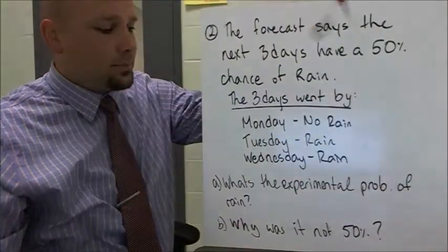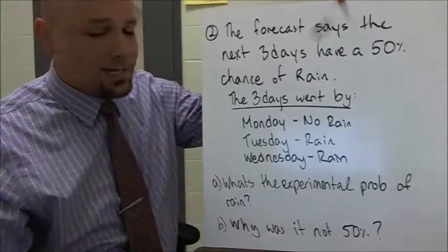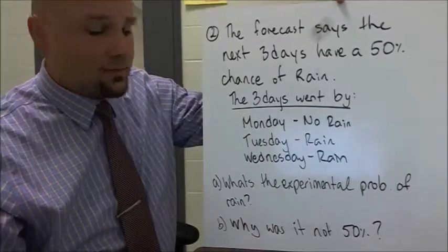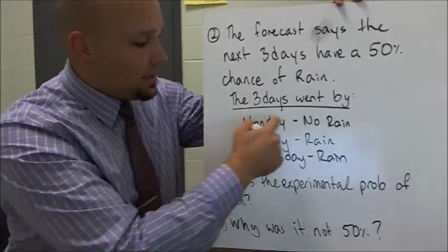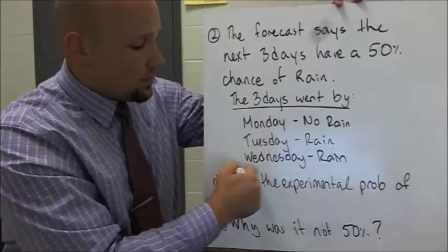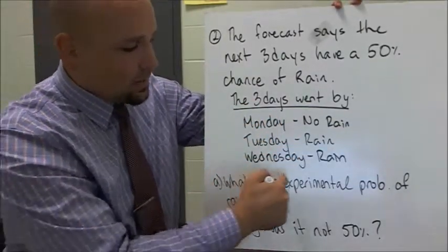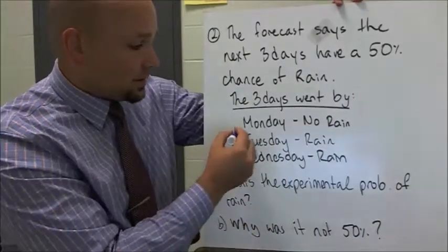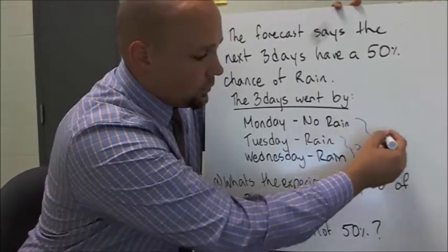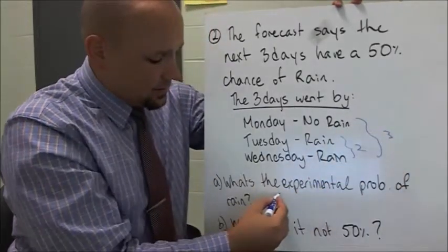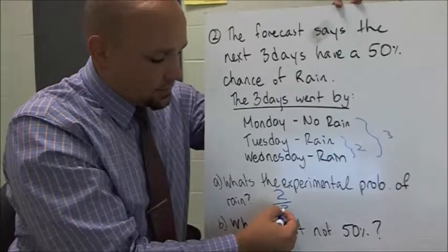So let's look at another example. The forecast says the next three days have a 50 percent chance of rain. Three days went by and Monday there was no rain, Tuesday there's rain, Wednesday there's rain. What's the experimental probability of rain? Well, it rained twice and there's a total of three days. So that means the experimental probability of rain was two out of three.